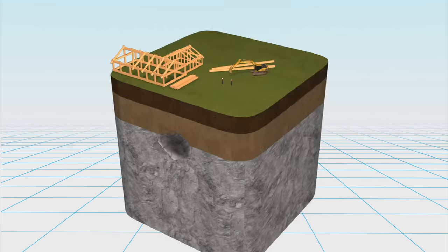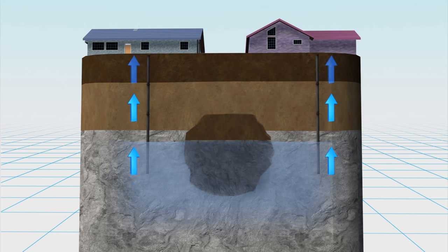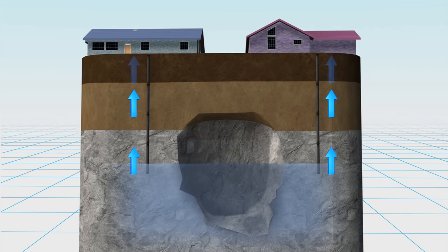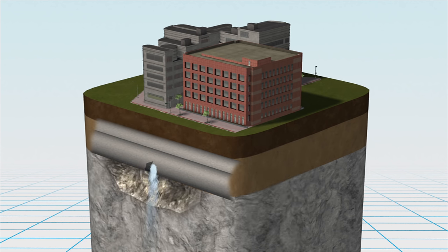Sinkholes are a natural occurrence but they can also be caused by human influences such as construction. Pumping of water from aquifers lowers the water table, which can also accelerate the creation of sinkholes. In urban areas, sinkholes can occur because of breaks in water mains or from sewer collapses.